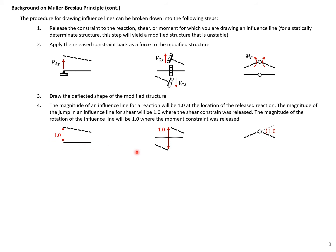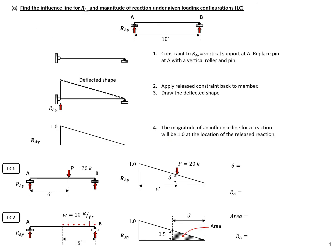We can use these to develop our influence lines. For the first part of this problem, we want to draw the influence line for the vertical reaction at point A. To do this, we replace the pin with a vertical roller, releasing the vertical restraint. We then displace it up, keeping a straight line for our beam, and the magnitude of the influence line at the reaction is 1.0. This is our influence line for the reaction at A.